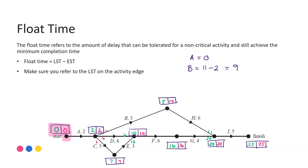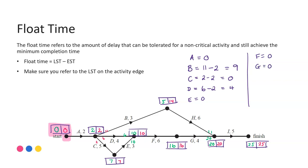Activity C: latest start time of 2, earliest start time of 2 - it's a critical activity with a float time of zero. Activity D: latest start time 6, earliest start time 2, so a float time of four. Activity E: float time of zero. Activity F: float time of zero. Activity G: float time of zero. Activity H: latest start time 14 minus earliest start time 5, so float time of nine. Activity I: float time of zero. Remember that any activity on the critical path should have a float time of zero.